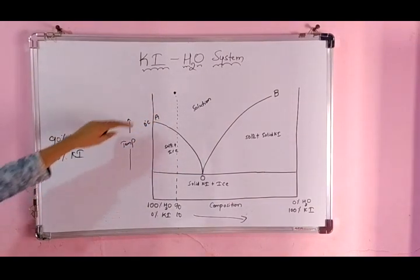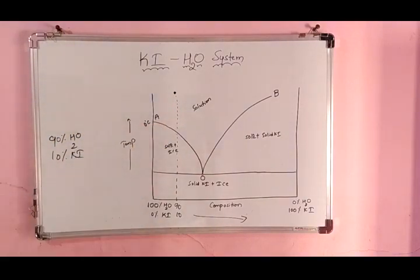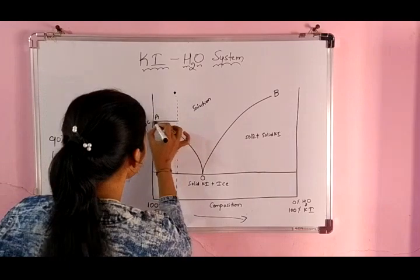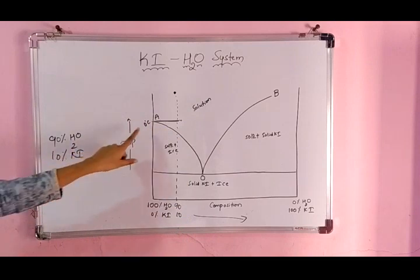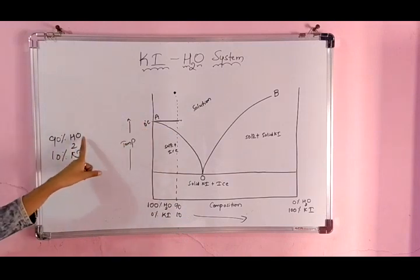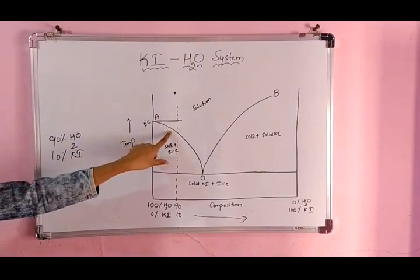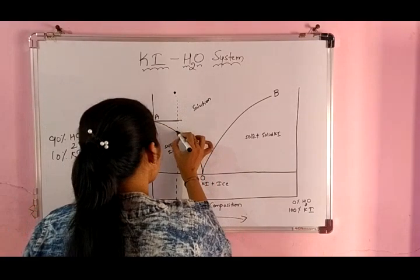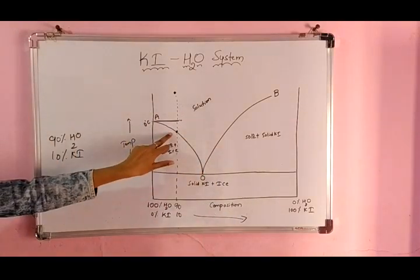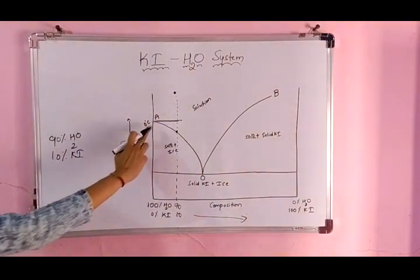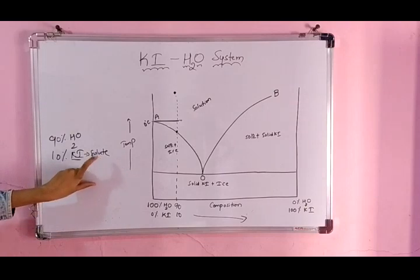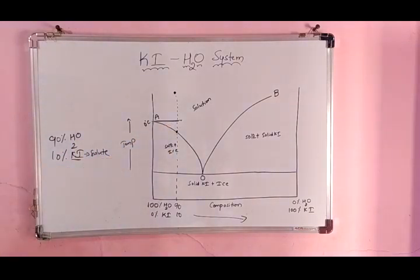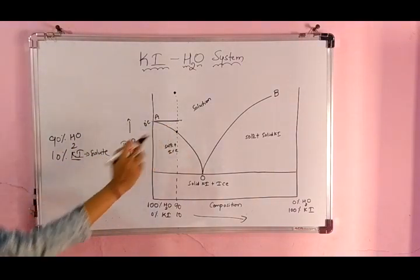Now slowly I will go on decreasing the temperature. At 0°C your ice should get solidified — that is the freezing point. But it is not happening there; it is getting solidified at a lower point on the curve. Why? Because there is a depression in the freezing point. When KI acts as a solute, adding any solute to the solution decreases the freezing point. So I get a depression in the freezing point.